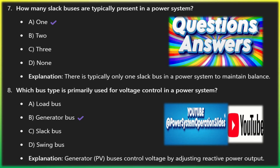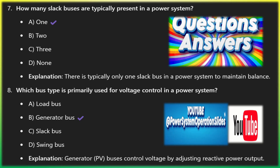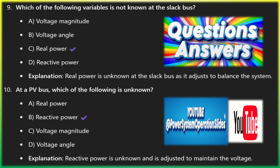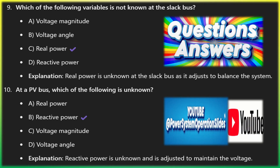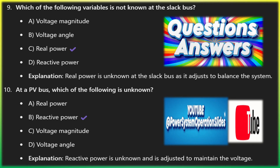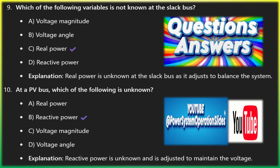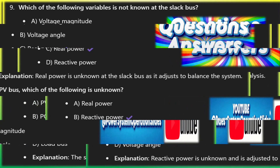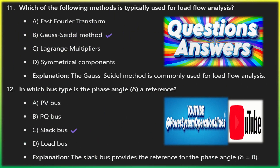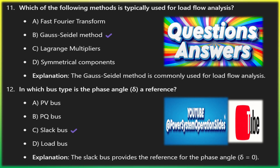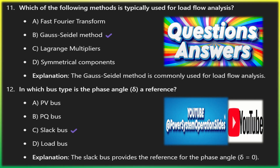Swing bus — alternative name for slack bus. The swing bus is essentially another term for the slack bus. Its role is the same: acting as the balance point for the system by supplying the additional power needed to cover system losses. Variables known: voltage magnitude V and voltage angle. Variables unknown: real power P and reactive power Q. It ensures that total generation equals total load plus losses, stabilizing the system. Example: same as the slack bus — typically a central power station or a control point.